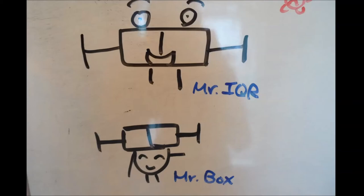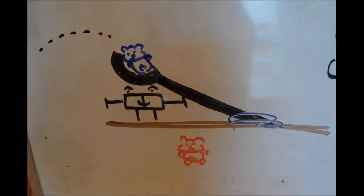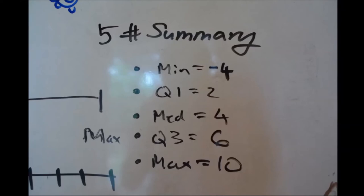All right, thanks, Mr. IQR. Say, for example, we have an experiment involving the calculation of the distance launched of gummy bears. Given a five-number summary with a minimum of negative 4 feet, a first quartile of 2, a median of 4, a third quartile of 6, and a max of 10.